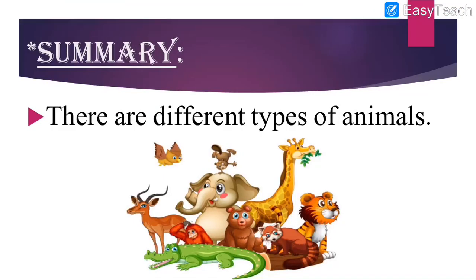After that, we had seen the summary. The summary includes all the important points of the lesson. There are different types of animals with different sizes and different weights. Some are tall, some are short. Like giraffes are tall. Then there are lions, tigers, elephants, deer, fox, crocodiles, and so many more animals. Some are wild and some are domestic.